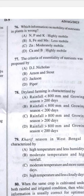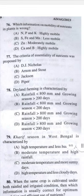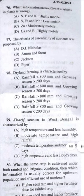Question 77: The criteria of essentiality of nutrients is given by B — Arnon and Stout.